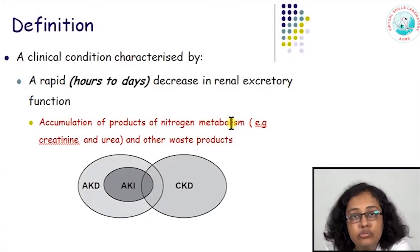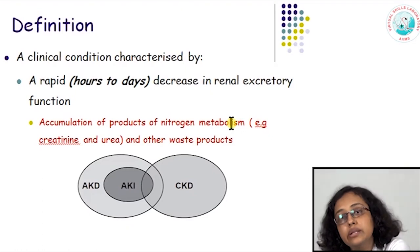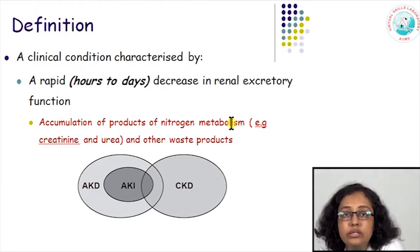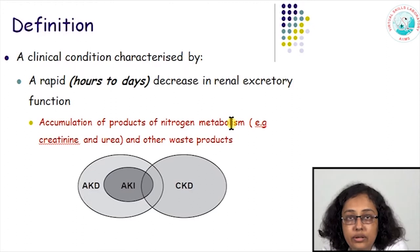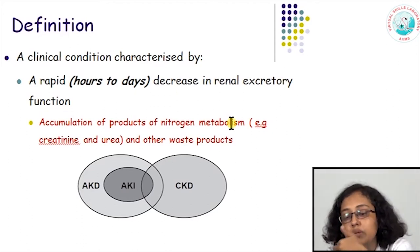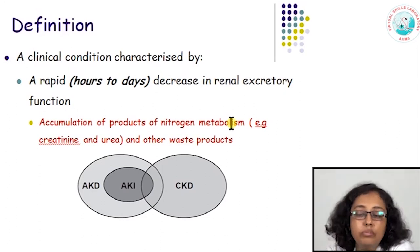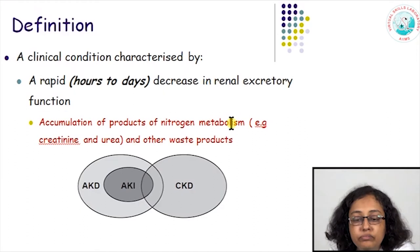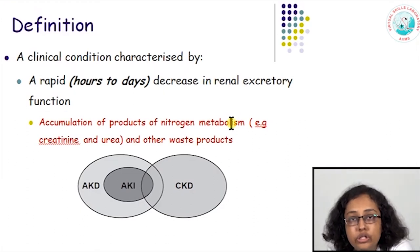When we define acute renal failure or acute kidney injury, it is a clinical condition characterized by a rapid decrease in the excretory function of the kidneys. When we say rapid, we consider it in terms of hours or days — that is what is acute. When the body cannot get rid of waste products because the kidneys are not working, it leads to accumulation of nitrogen metabolism products like urea and creatinine, causing a rise in blood levels of these products. That is what we measure with blood urea and serum creatinine, which are markers of kidney function.